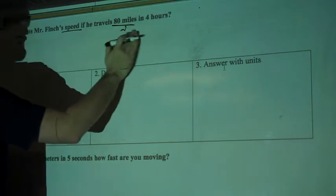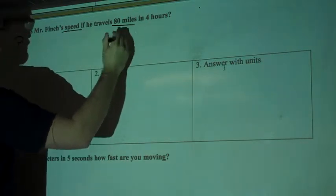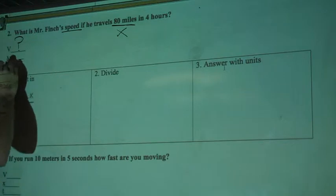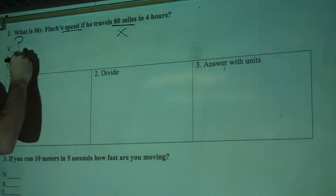So I'm going to write that in here. Instead of writing D, I'm going to keep the variable that we have here, X. And for X, I'm going to write 80 miles.